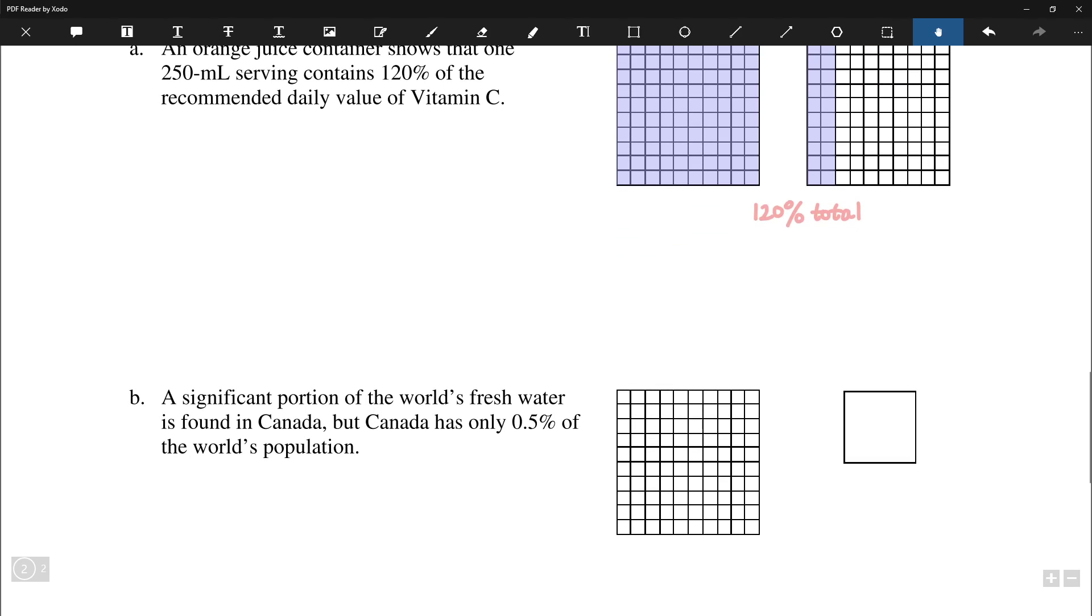Next up, a significant portion of the world's fresh water is found in Canada, but Canada only has 0.5% of the world's population. So in this case, go ahead and shade in half of one square. Again, we can draw kind of a zoom in version on the side there. And this is again, 0.5% or half a percent.